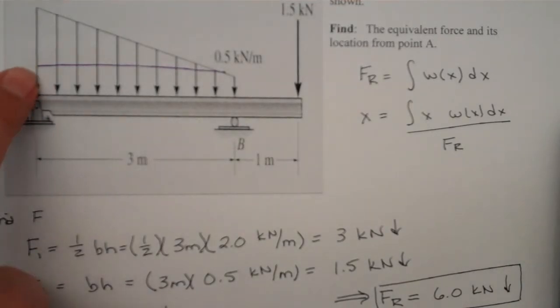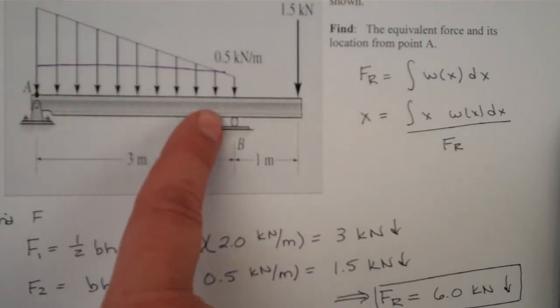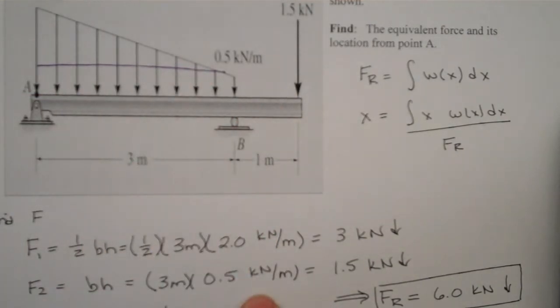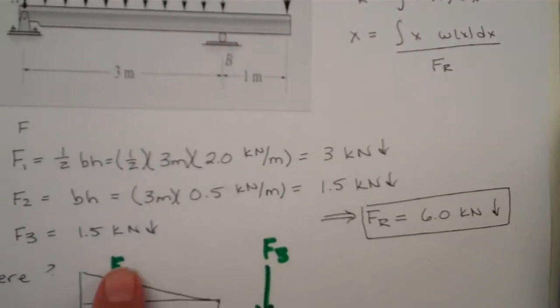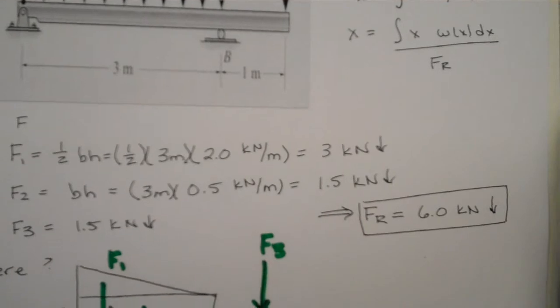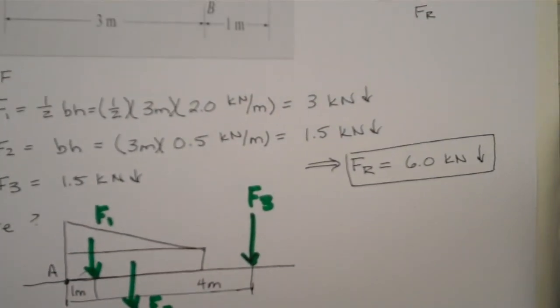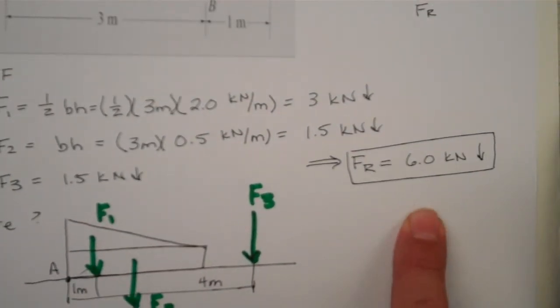For the rectangle, we will take base times height, and our base is three meters, our height is 0.5 kilonewtons per meter, so 1.5 kilonewtons downward. And then again, force three is given. So, we've replaced this now with three forces, and if we determine what our net force is, we see that this distributed load plus individual force gives us a net force of six kilonewtons downward.